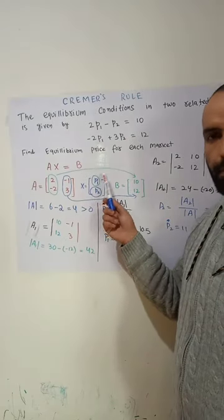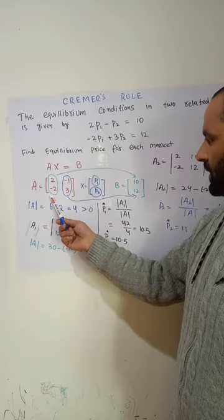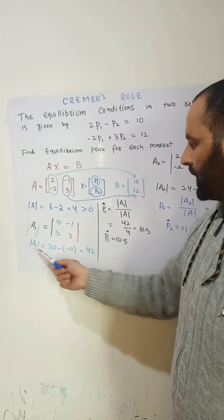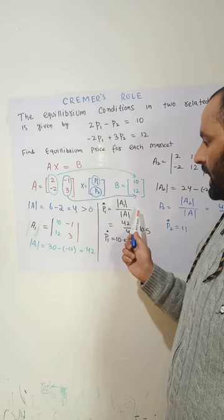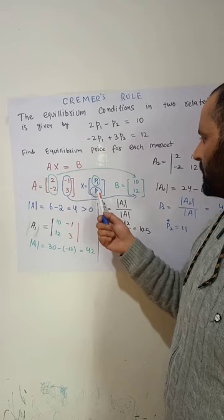To find the equilibrium value of p1, we replace the first column of the coefficient matrix with the vector of constant terms and form a new matrix A1, then take its determinant. The equilibrium price p1 is equal to the determinant of A1 divided by the determinant of the coefficient matrix, which comes out to be 10.2.